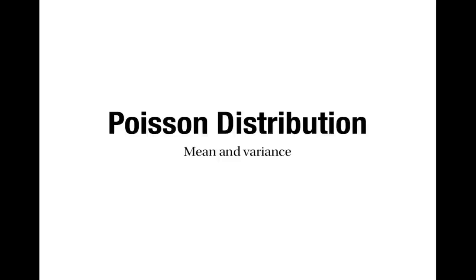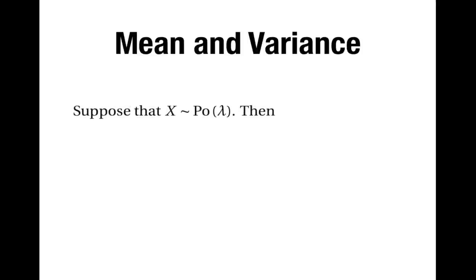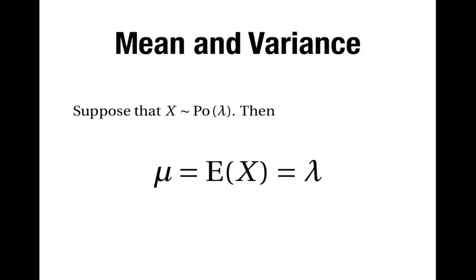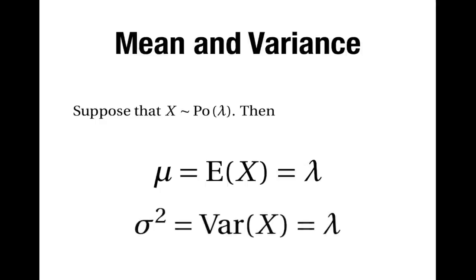This is a video about the mean and variance of a Poisson distribution. Suppose that x has the Poisson distribution with parameter lambda. Remember that lambda represents the expected value of x — the expected number of events in the particular interval of time or space. So the mean value of x, the expected value, is equal to lambda by definition. It's also true that the variance of x is equal to lambda. So for the Poisson distribution, both the mean and the variance are equal to lambda.